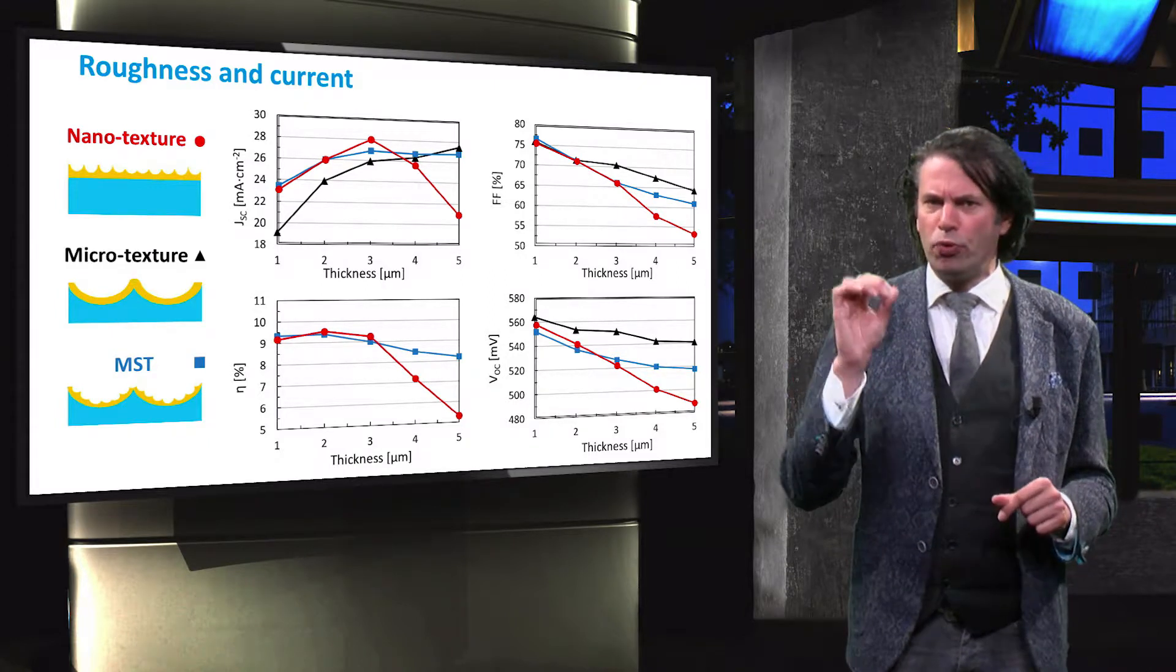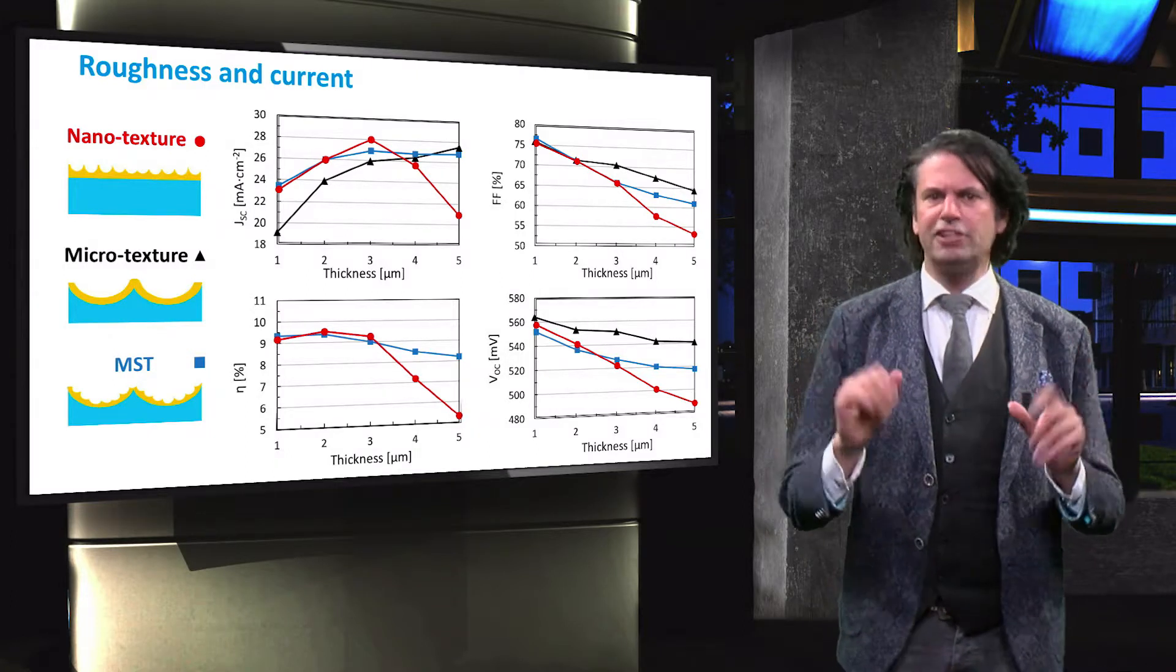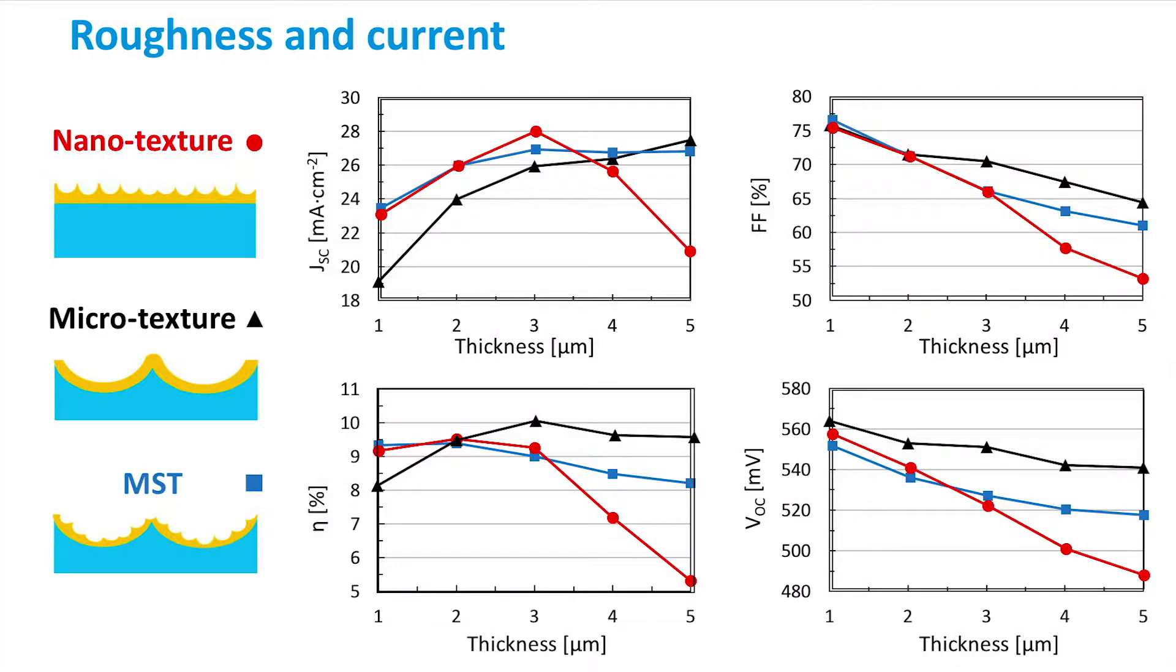Due to the poor fill factor and open-circuit voltage, the efficiency of the cell with microtexture does strongly increase with increasing absorber layer thickness, up to 3 microns, at which point it outperforms the nanotexture cells.